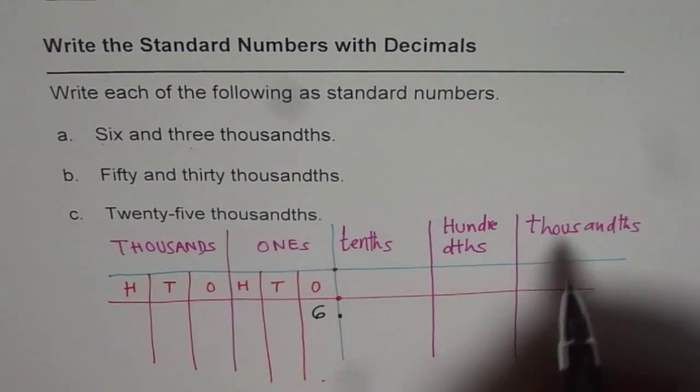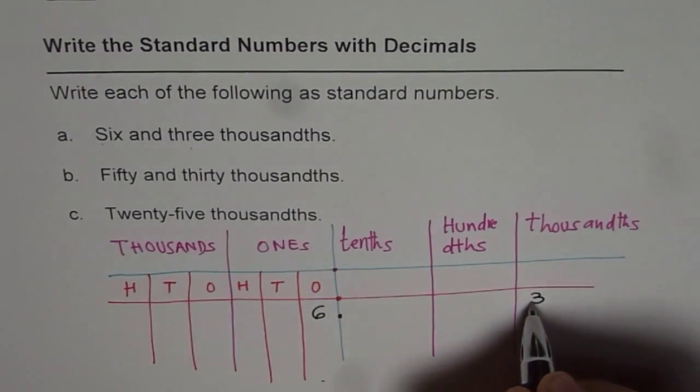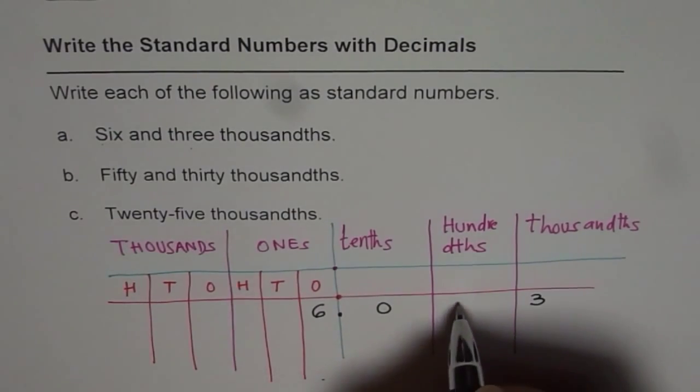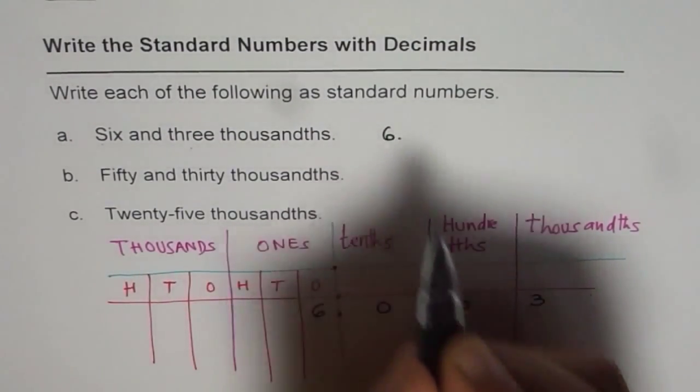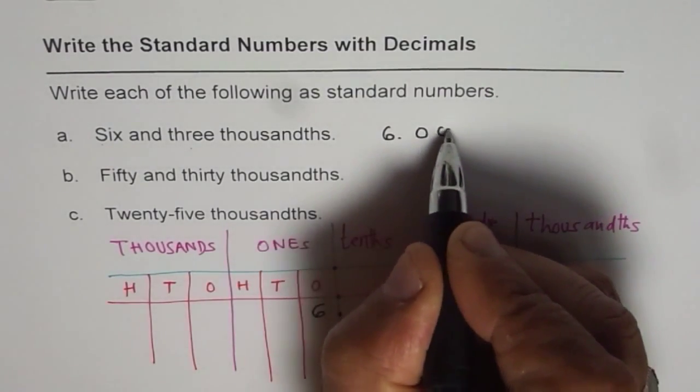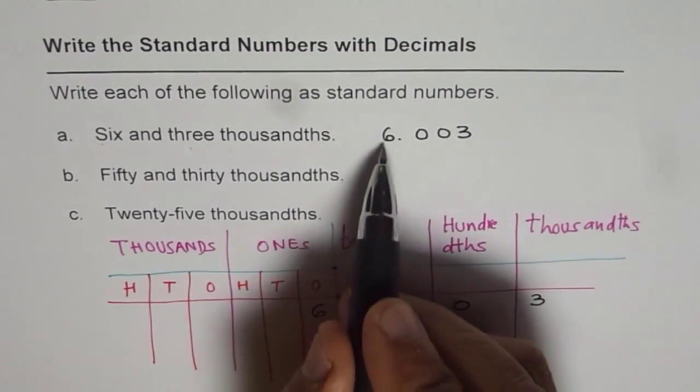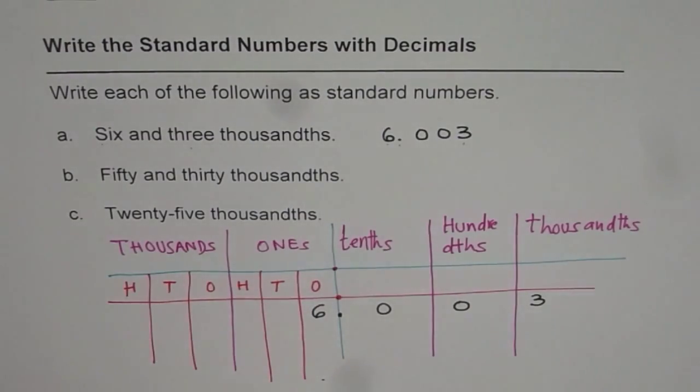So in thousandths we have the number three. In between we need to fill with zeros. So we get our number which is six point zero zero three. Six and three thousandths.